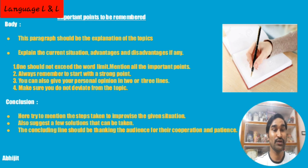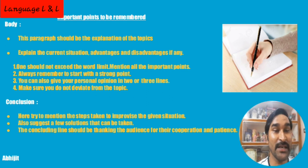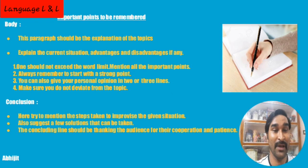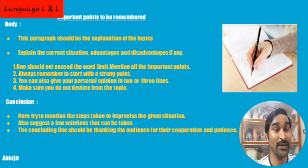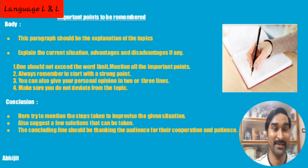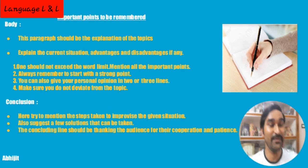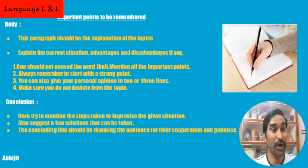This paragraph should be an explanation of the topic. Explain the current situation, advantages and disadvantages if any. One should not exceed the word limit — mention all the important points that will be covered in the question. Always remember to start with a strong point. You can also give your personal opinion in two or three lines. Make sure you do not deviate from the topic — deviate means you are not going off-topic.